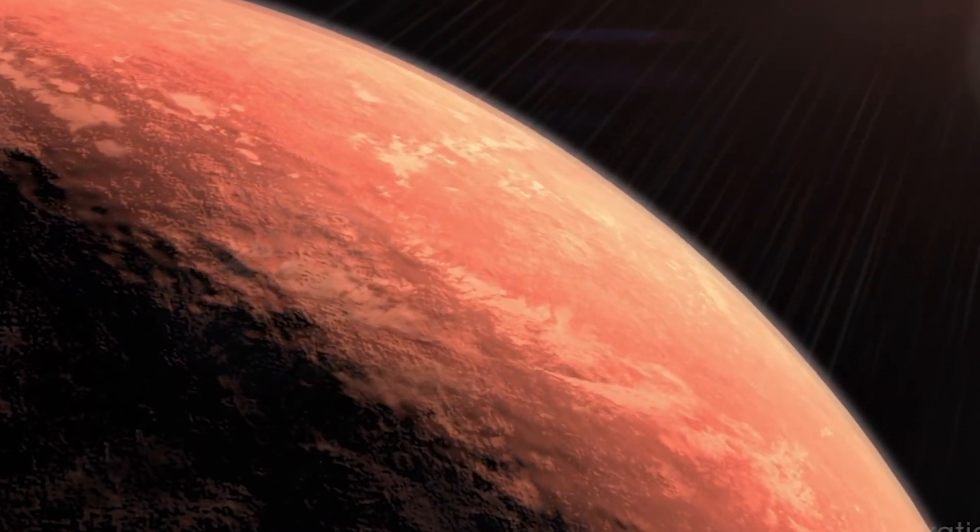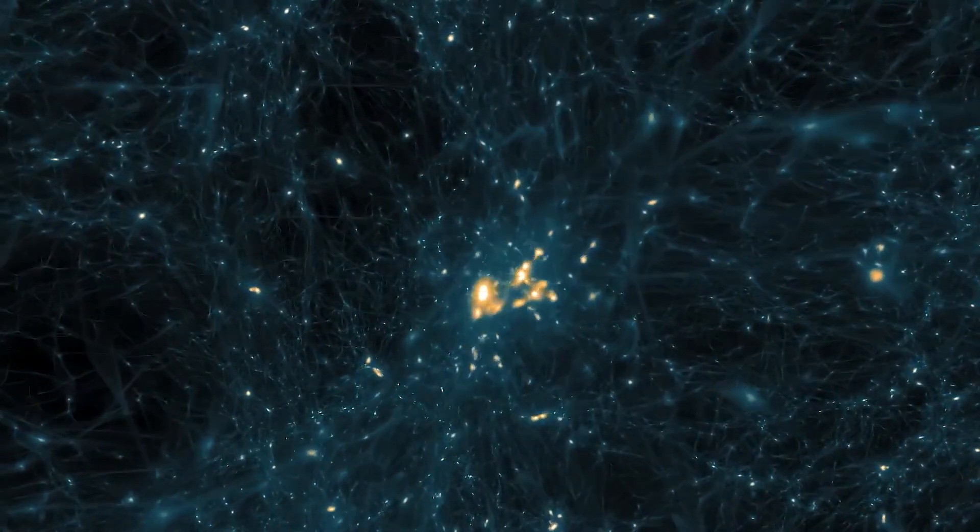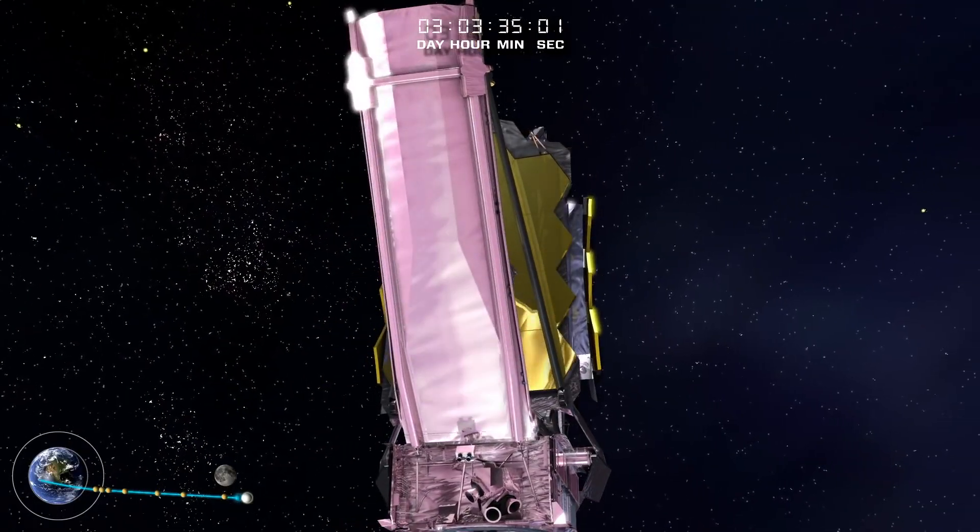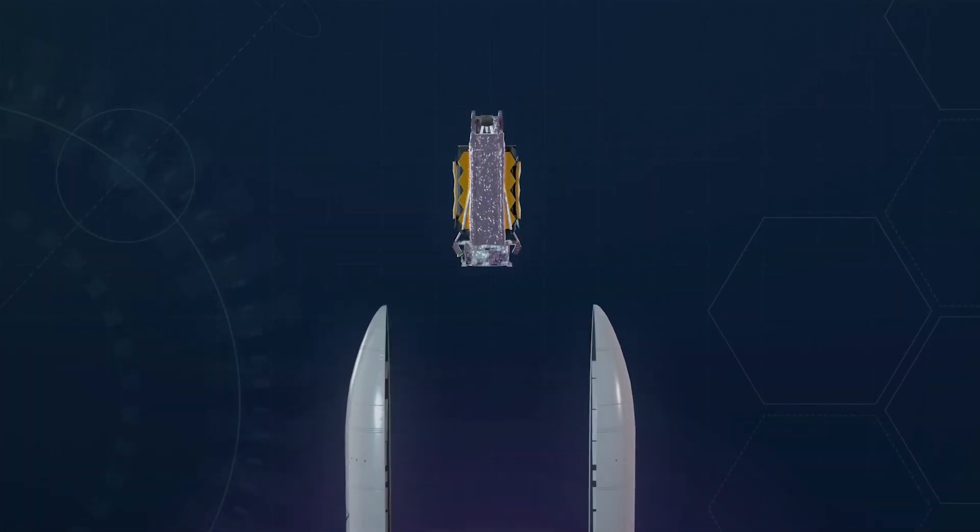The primary mirror on the telescope is divided into 18 segments. The mirrors are extendable and gold-plated. This design allows the telescope to comfortably fit inside the rocket.